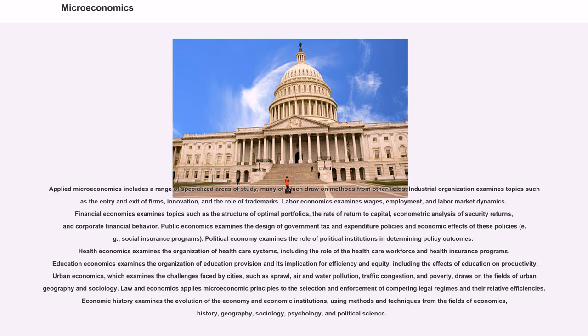Financial economics examines topics such as the structure of optimal portfolios, the rate of return to capital, econometric analysis of security returns, and corporate financial behavior. Public economics examines the design of government tax and expenditure policies and economic effects of these policies, for example, social insurance programs. Political economy examines the role of political institutions in determining policy outcomes.